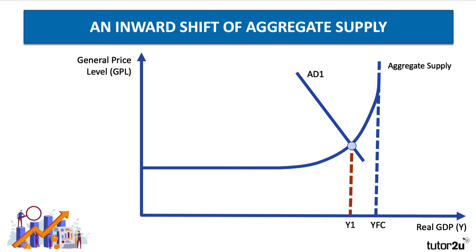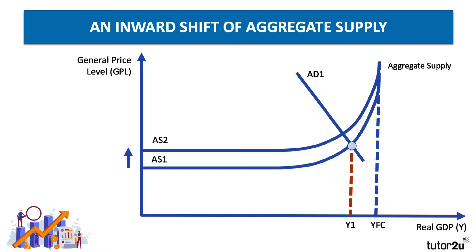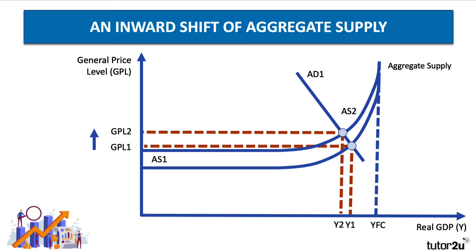Here's our Keynesian aggregate supply curve with an initial equilibrium of Y1. If the short-run costs of production go up, then the curve will shift from AS1 to AS2. The economy has a higher level of unit cost of supply. The consequence is a new equilibrium with a fall — a contraction of real output from Y1 to Y2, and critically, an increase in the general price level from GPL1 rising to GPL2. This is a good diagram to draw if you get a question on the causes of cost-push inflation.